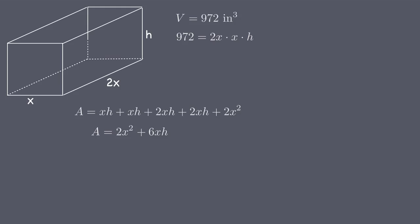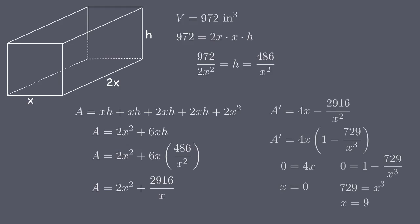We need to get our optimization area equation down to one variable, which means we have to plug in for h. We can manipulate the constraint equation to find that h is 972 over 2x squared, or 486 over x squared. Now we can take this value for h and plug it into the optimization equation. We can start to calculate critical points by taking the derivative of our optimization equation, setting that equal to zero, and solving for x.